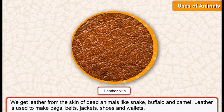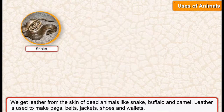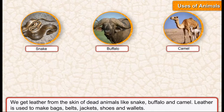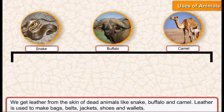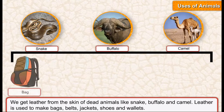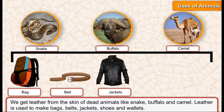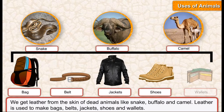We get leather from the skin of dead animals like snake, buffalo, and camel. Leather is used to make bags, belts, jackets, shoes, and wallets.